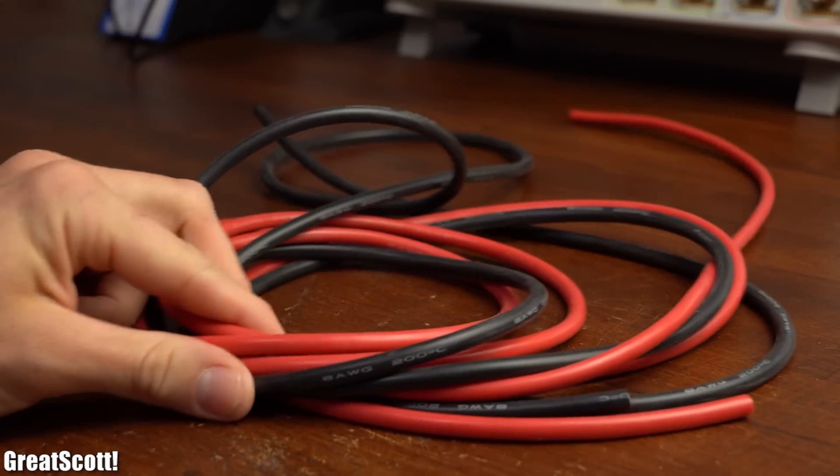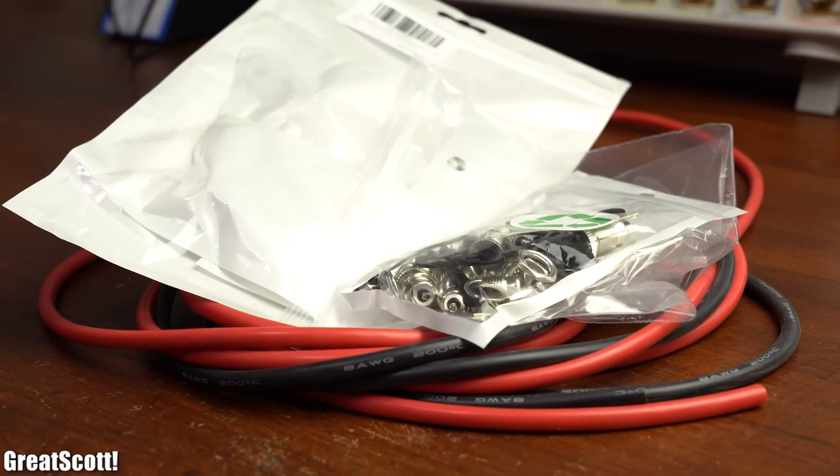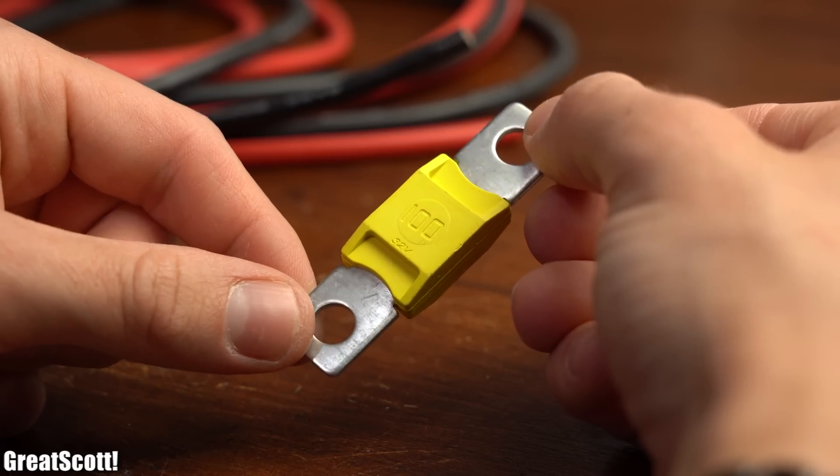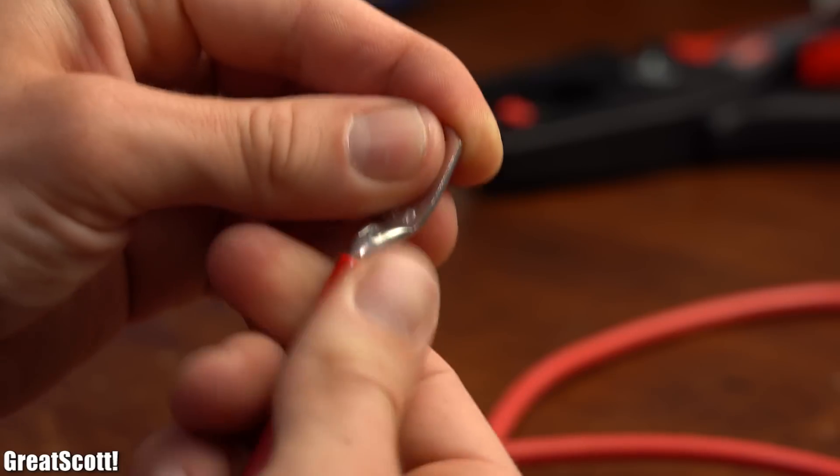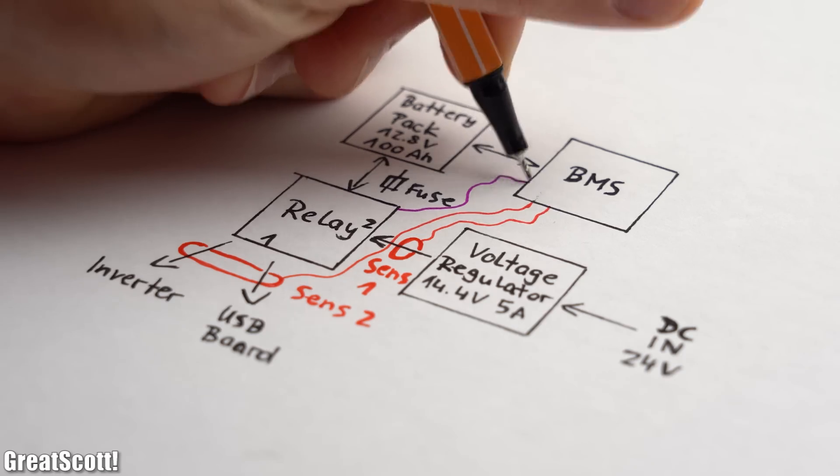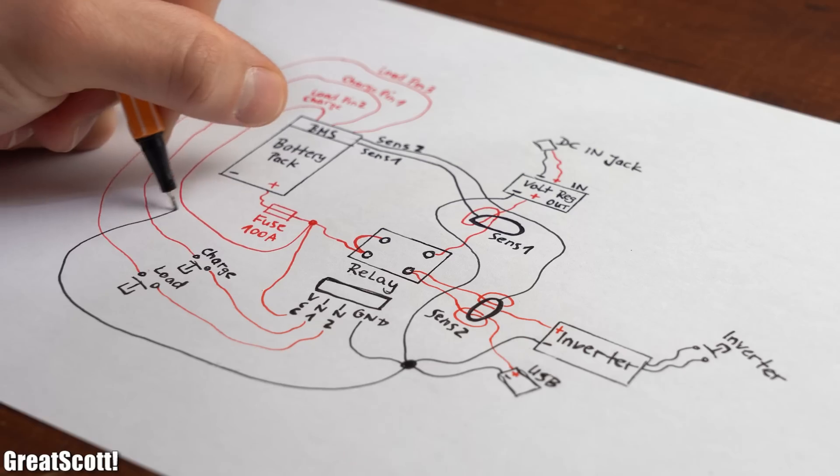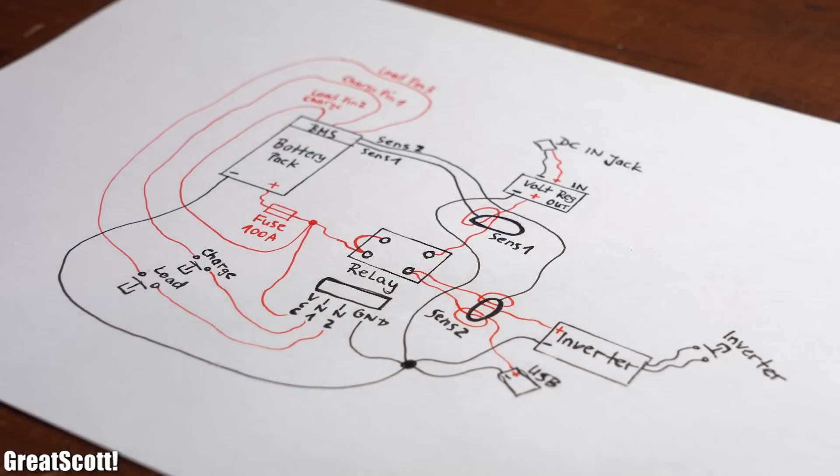Of course I also got some thick wiring, switches, connectors and much more for this build. But if you want those juicy details then you will have to take a look in the video description. But anyway after I was done not only completing my functional block diagram but also my wiring diagram for this project.